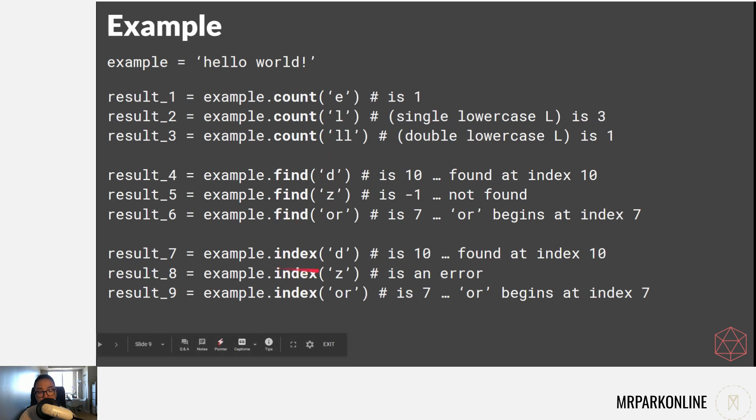If we use index method instead of find, 'd' gives the same thing, but 'z' will produce an error and will not go beyond that line. Index of 'or' also gives the same answer. The big difference is that index will give an error when you can't find something, so you'll see red lines on your Python interpreter, whereas find will give us negative one to denote that it wasn't able to find it.